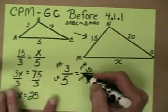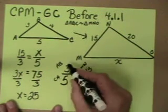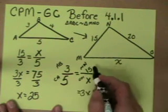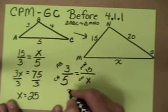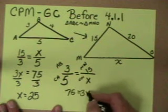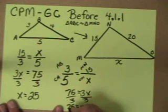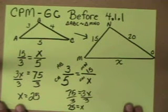When I cross multiply, you're going to see that I get the same exact thing I did before. 3 times X, 3X equals 5 times 15, which is 75, which gives me X equals 25. Same answer, just a different process.